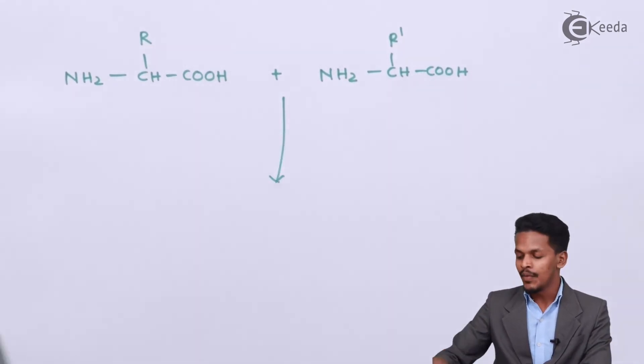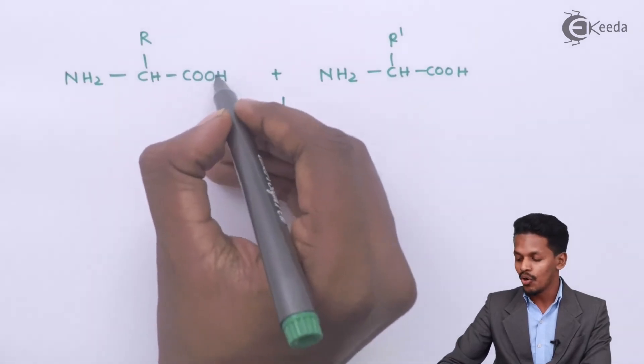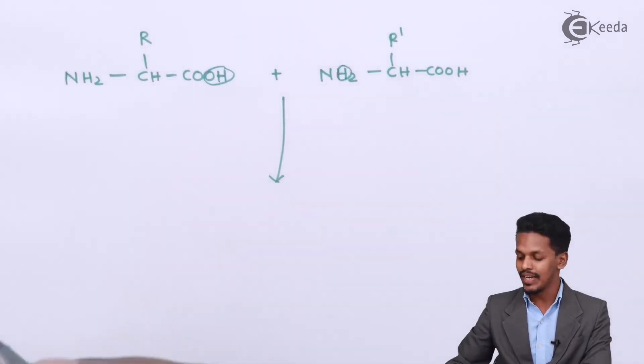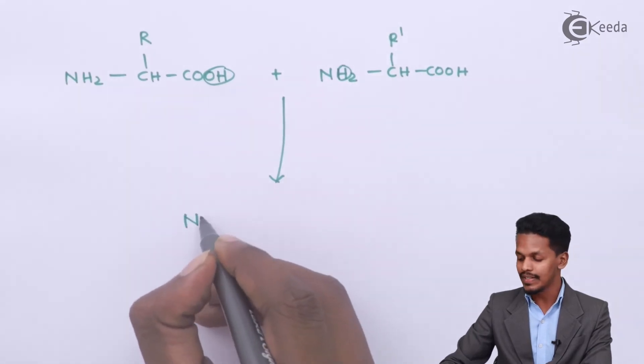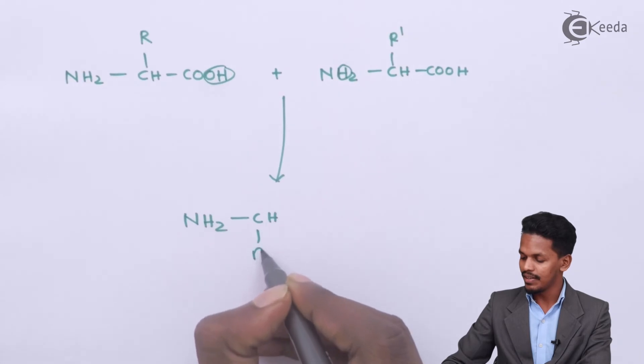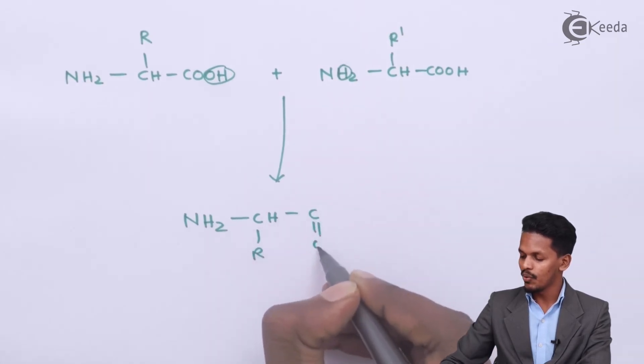And suppose if we have introduced another alpha amino acid, that is NH2-CH-COOH. In that case we could get the elimination of OH from here and one of the H will be eliminated from this side. The product that we could get is NH2-CHR-COOH.